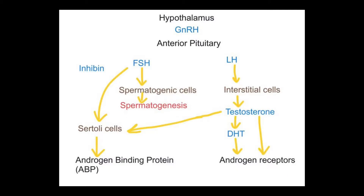Now, after this, another important thing is hormonal control. There is some activity for which hormones play a role. What is gonadotropin-releasing hormone? Gonadotropin-releasing hormone releases gonadotropins — which are FSH (follicle-stimulating hormone) and LH (luteinizing hormone). Both are gonadotropins. Gonadotropin-releasing hormone orders the anterior pituitary gland to release FSH and LH.